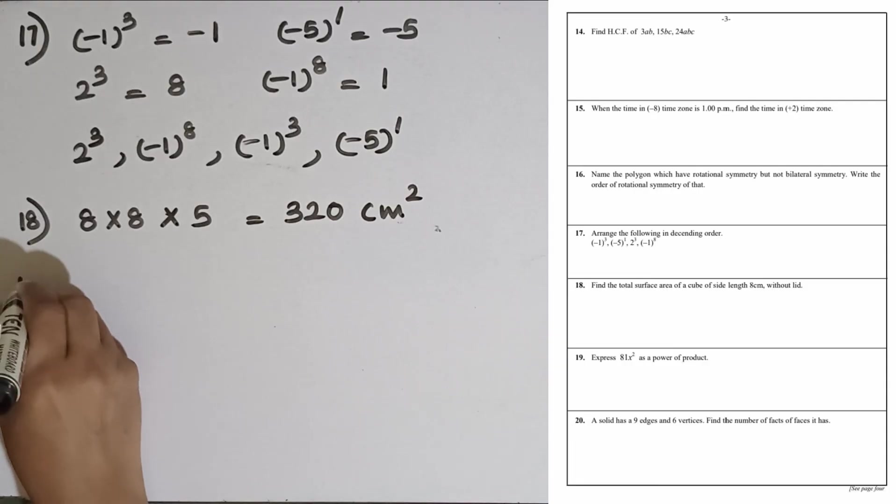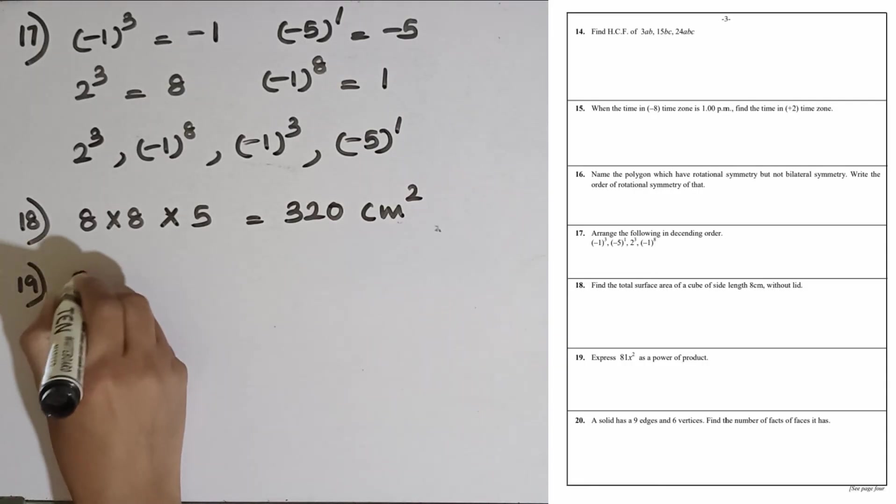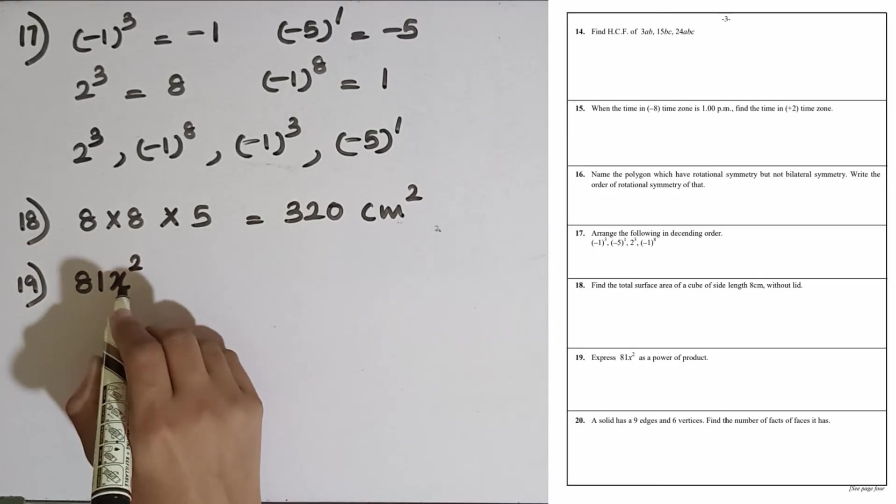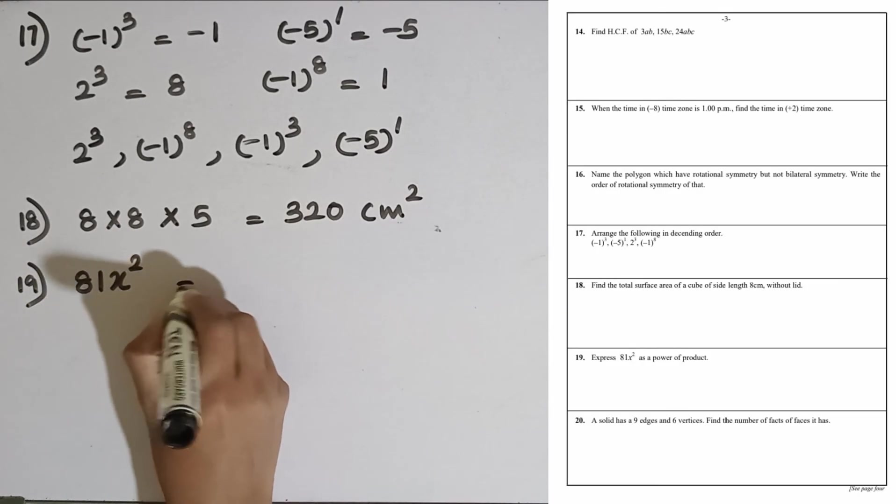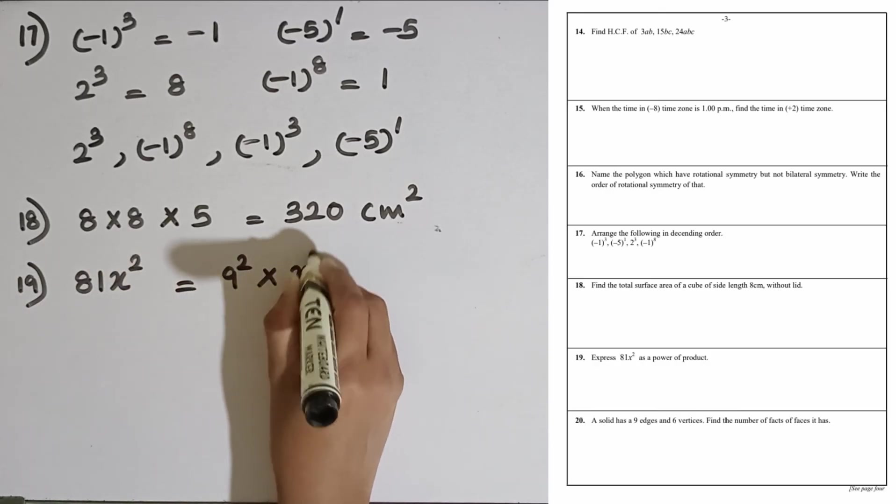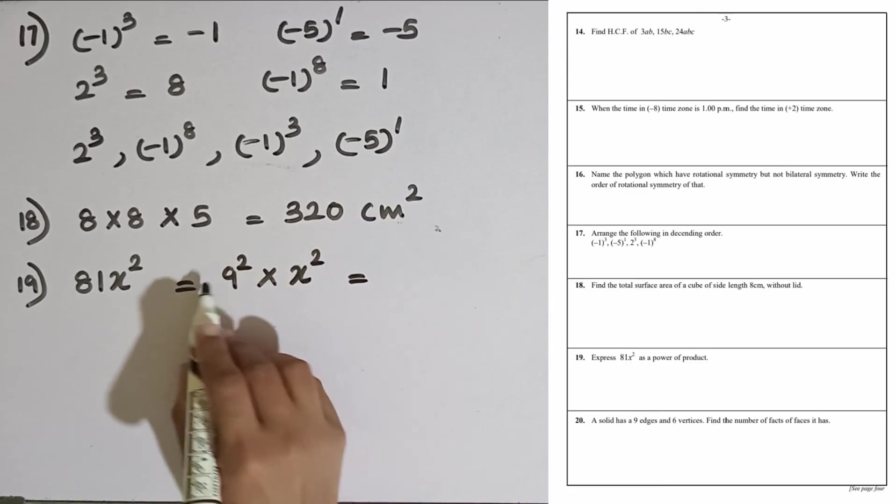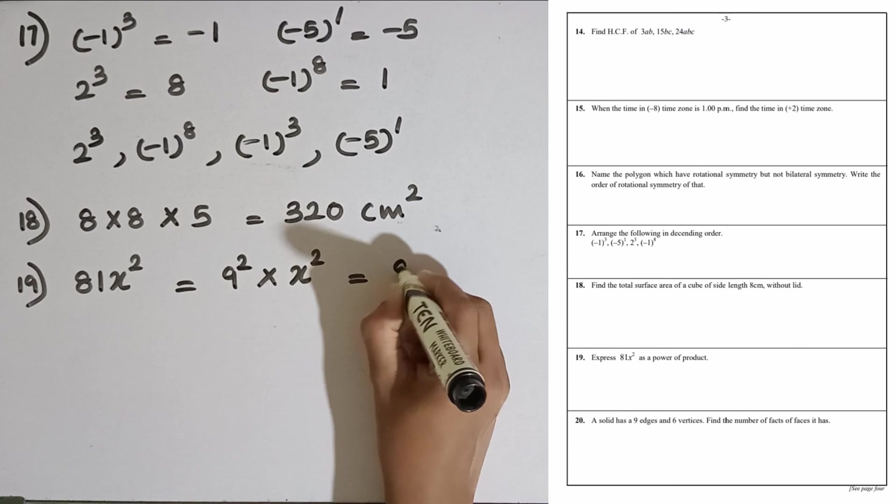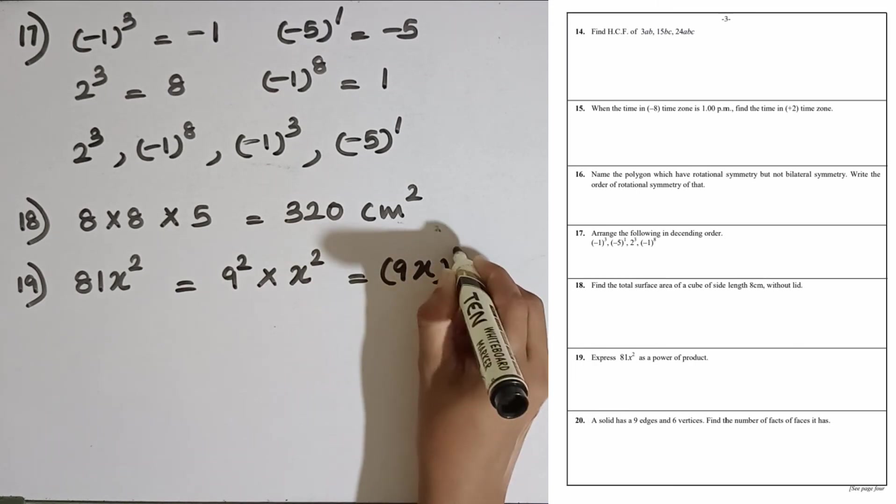Question number 19: Express 81x squared as a power of product. 81 can be written as 9 squared multiplied by x squared, so we can write it as a power of a product as 9x to the power 2.